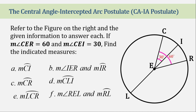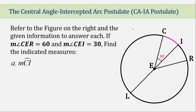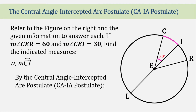Now let's refer to this example. Looking at the figure on the right and the given information to answer each question. First, if angle CER measures 60 degrees and angle CEI measures 30 degrees, let's find arc CI. By the central angle intercepted arc postulate, arc CI measures 30 degrees.